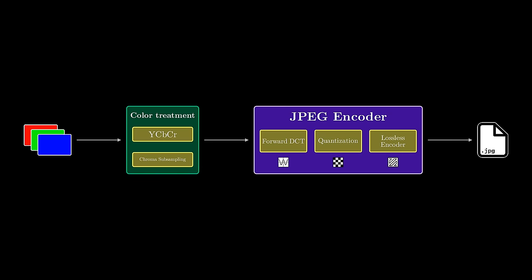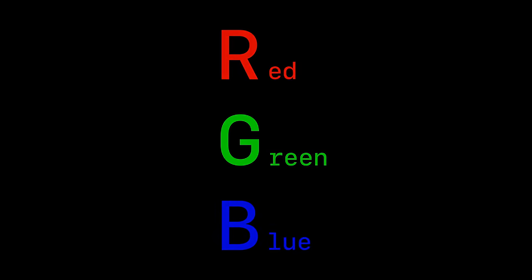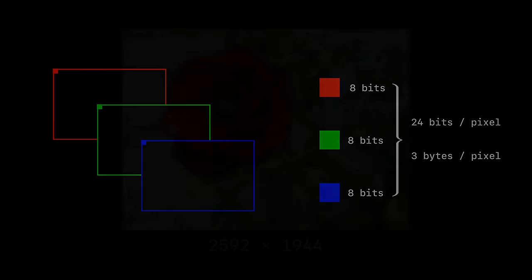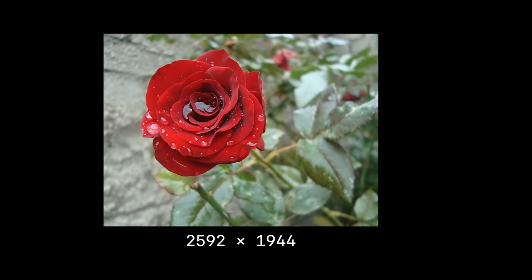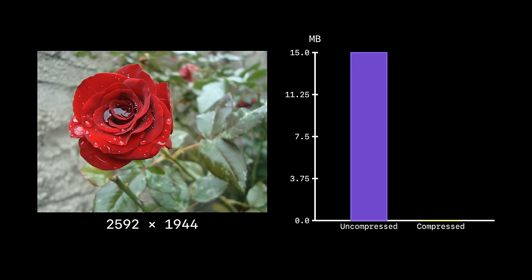Before we dive into JPEG, let's talk about how computers represent images. The standard color space that computers use is the RGB model. Every pixel of an image stores three values from 0 to 255, with higher values representing a larger weighting of the respective color. So assuming each color component is expressed in 8 bits, or a single byte of memory, an image has 3 bytes per pixel. Here's an image with a little more than 5 million pixels.